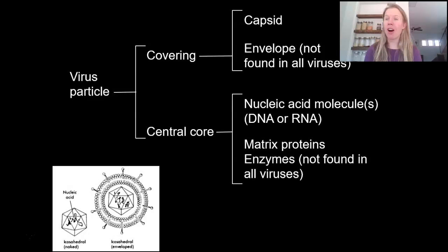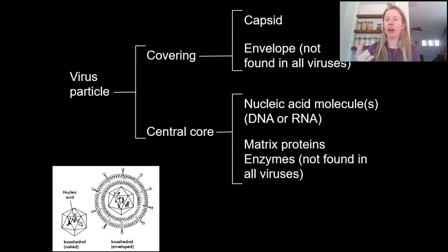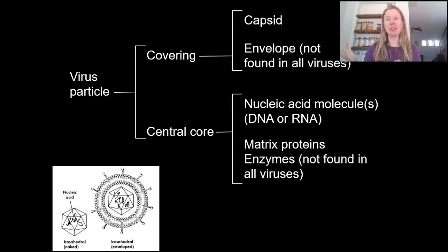Viruses are also not very complicated. A virus basically has an outer covering and a central core. In that central core we have to have some kind of genetic material — nucleic acids, DNA or RNA. Viruses are strange in many ways: they can carry double-stranded DNA, single-stranded DNA, single-stranded RNA, or even double-stranded RNA.